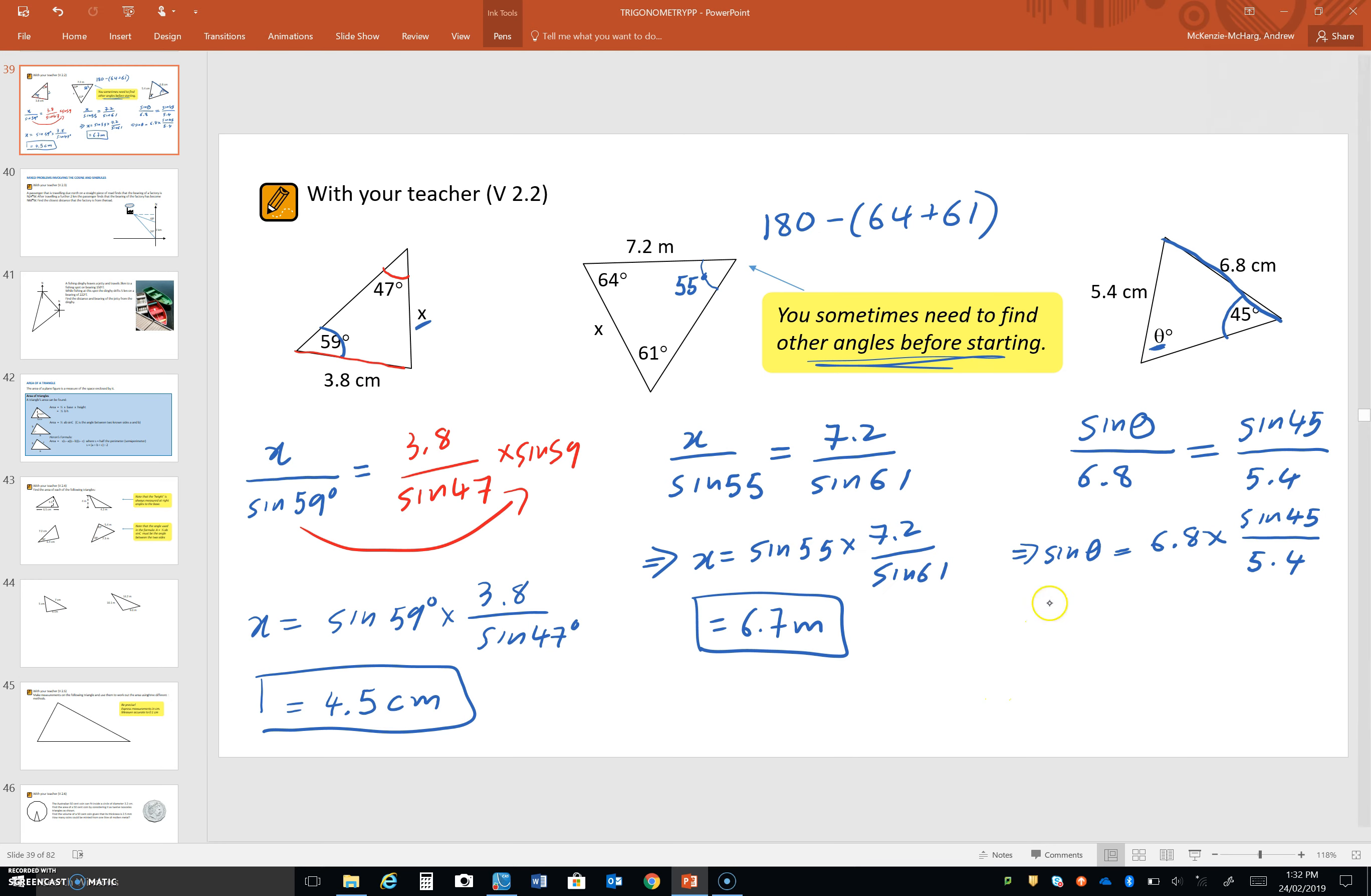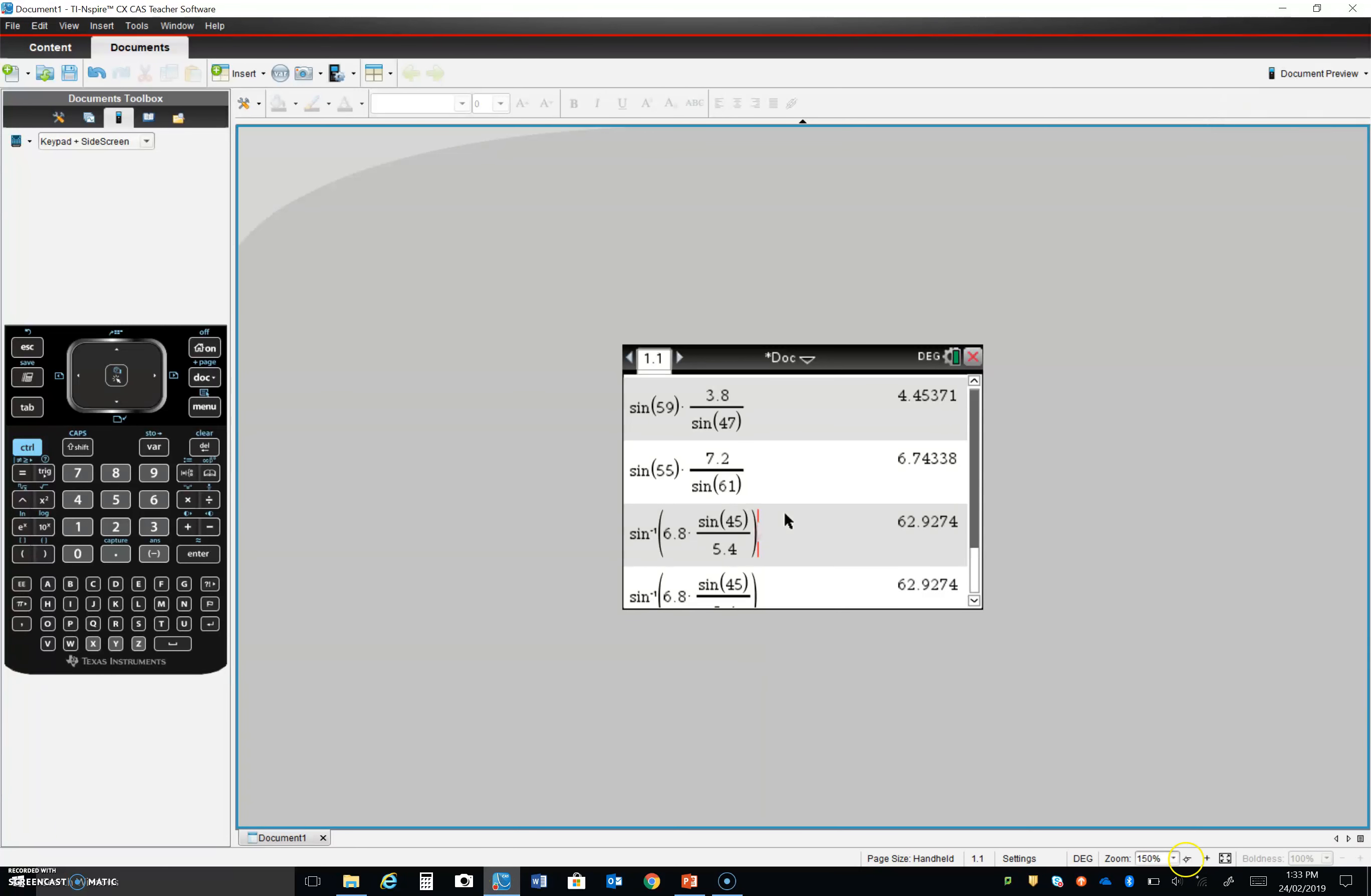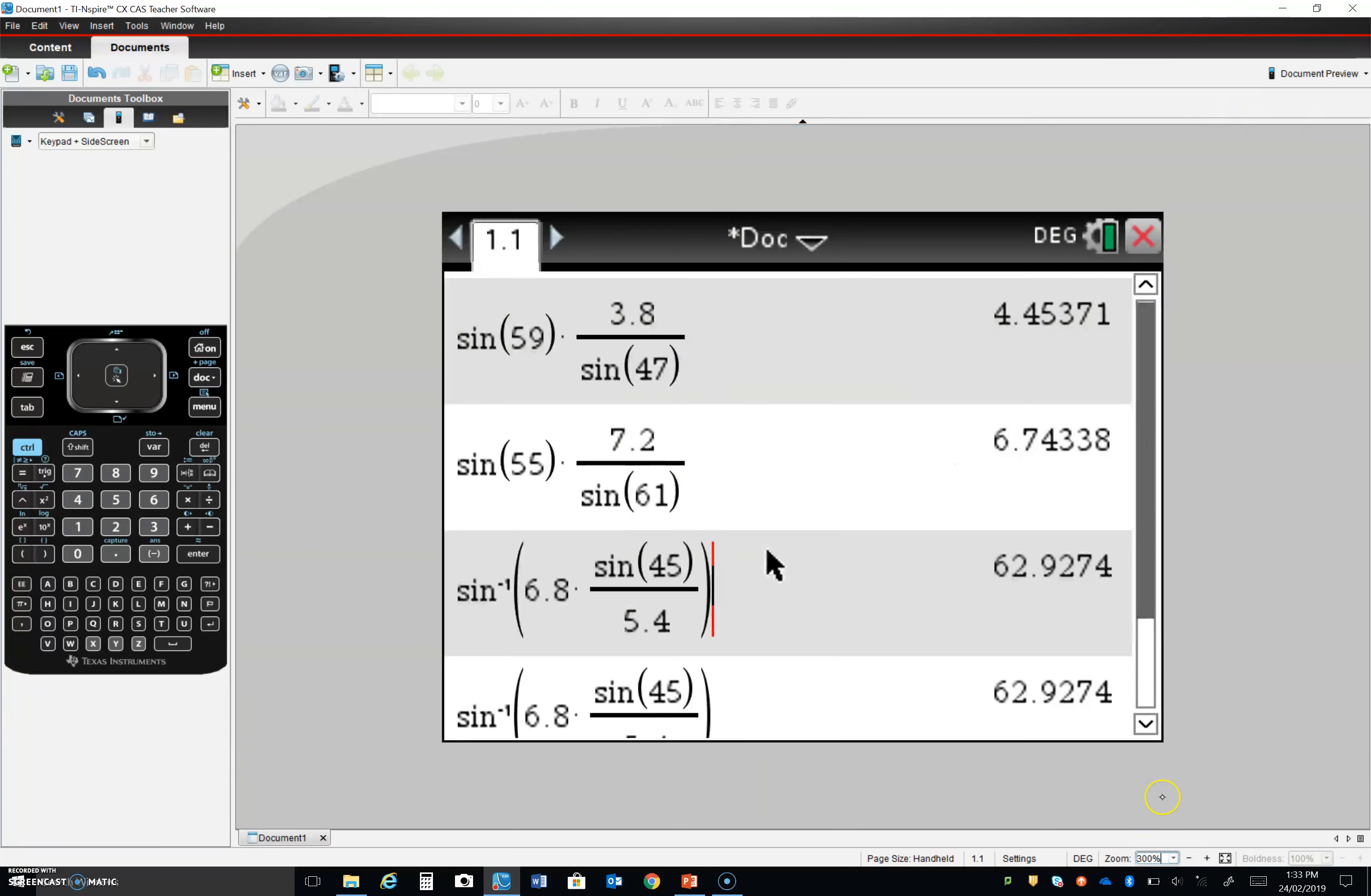So, theta is the inverse sine, and we put all this stuff in brackets here. Okay, so all of that needs to go into the calculator. Okay, let's have a look at what the answer to that is. So, here's all the calculations that I did for this video. If you weren't sure about any of those, you can look through. That's what we would enter.